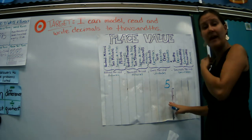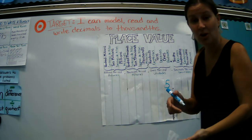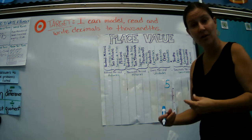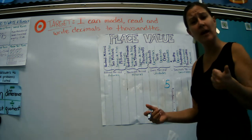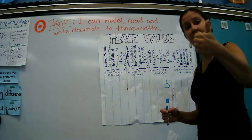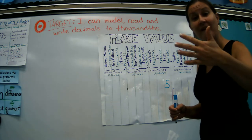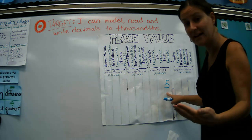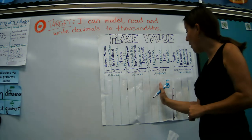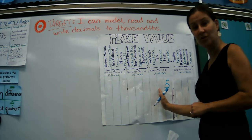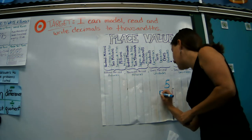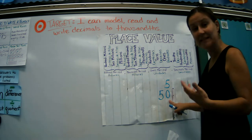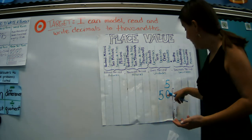If I take that five and I multiply it by 10, which means I have 10 groups of five, what would that give me? Well, let's think about it: five, ten, fifteen, twenty, twenty-five, thirty, thirty-five, forty, forty-five, fifty. So if I multiply five times ten, it gets one place bigger on the place value chart and it becomes 50. So we can see that 50 is 10 times greater than five.